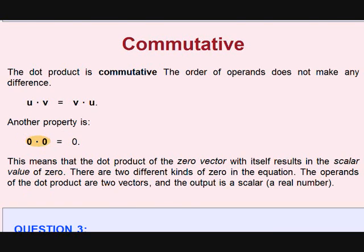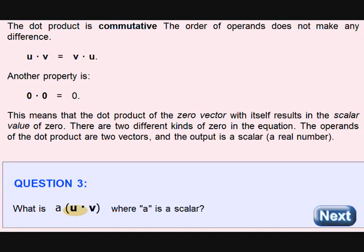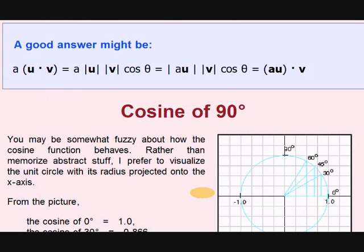What is A into U dot V? A U dot A V is the answer. A is a scalar. A into modulus of U, modulus of V into cos theta. You cannot just like that multiply. Is equal to A U, A into U into dot, dot product of V vector.